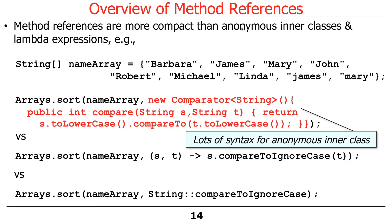Here's the first way — the old way of doing things using anonymous inner classes, the carpal tunnel syndrome-inducing verbose way. We say arrays.sort nameArray, and here is the comparator used to compare two strings. In this case, we're going to compare them in a case-insensitive way — we lowercase them before comparing. So you have: new Comparator for String, public int compare, String s, String t, return s.toLowerCase().compareTo(t.toLowerCase()). A lot of extra syntax.